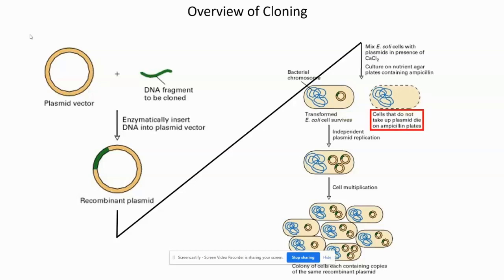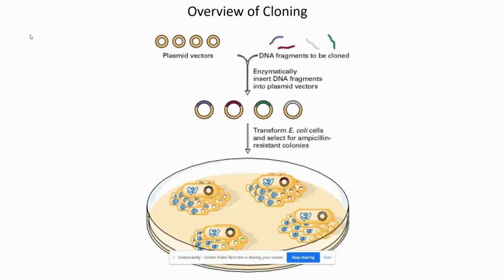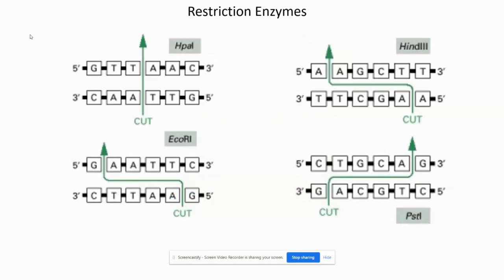Cells that did not successfully get transformed and do not have our plasmid will die in the presence of ampicillin, whereas cells that got our plasmid are ampicillin-resistant and will grow on ampicillin-containing media. We can clone a single gene with this strategy, multiple genes simultaneously, or even create chromosomal libraries where entire genomes are sheared into small sizes and each fragment is independently cloned into its own vector. In any case, we grow the cells that receive those plasmids on ampicillin-containing plates, selecting specifically for cells that got our plasmid.